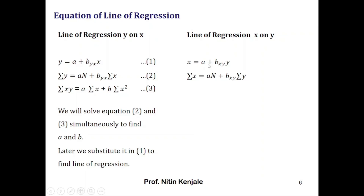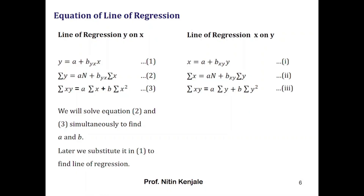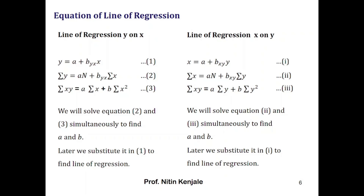On similar lines, to find the line of regression x on y, we take summation on both sides to get: summation x equals n·a plus bxy times summation y. Next we multiply throughout by y and take summation to get: summation xy equals a times summation y plus bxy times summation y squared. We label these three equations 1, 2, and 3, solve equations 2 and 3 simultaneously for a and b, then substitute back into equation 1 to get the line of regression x on y.